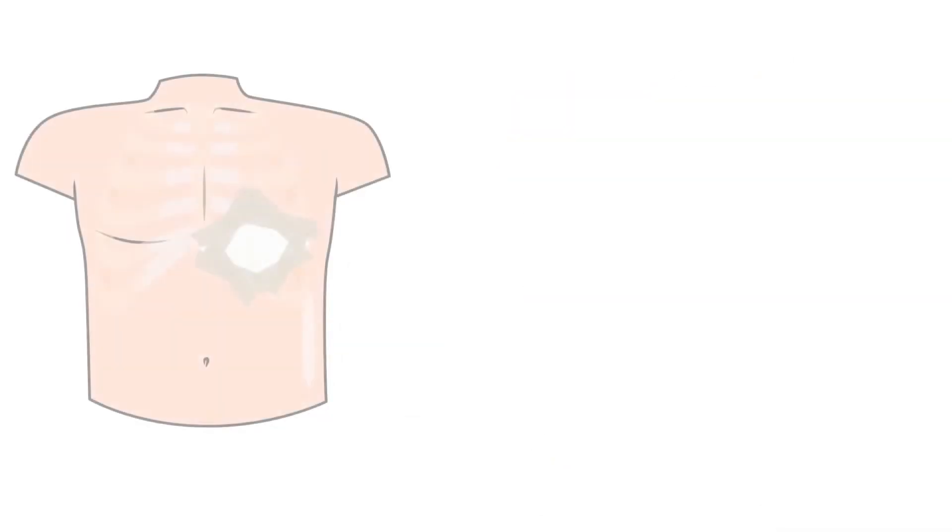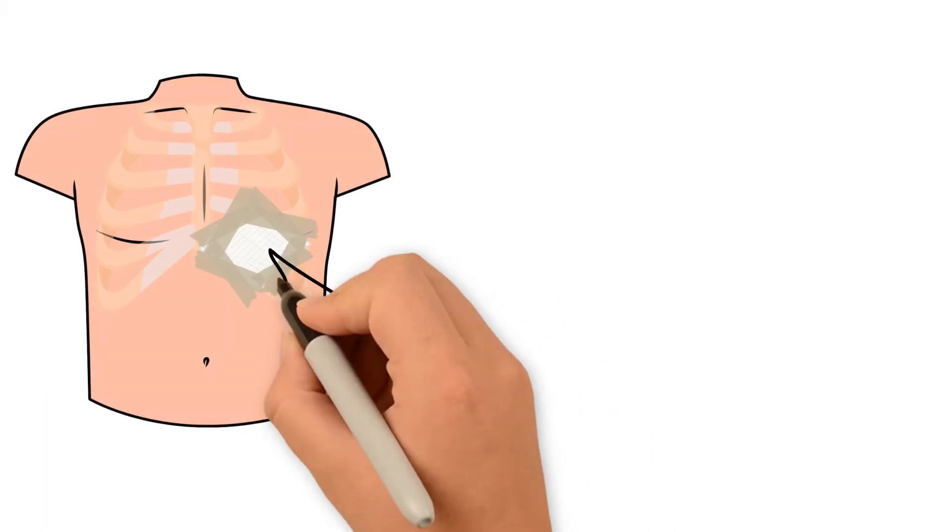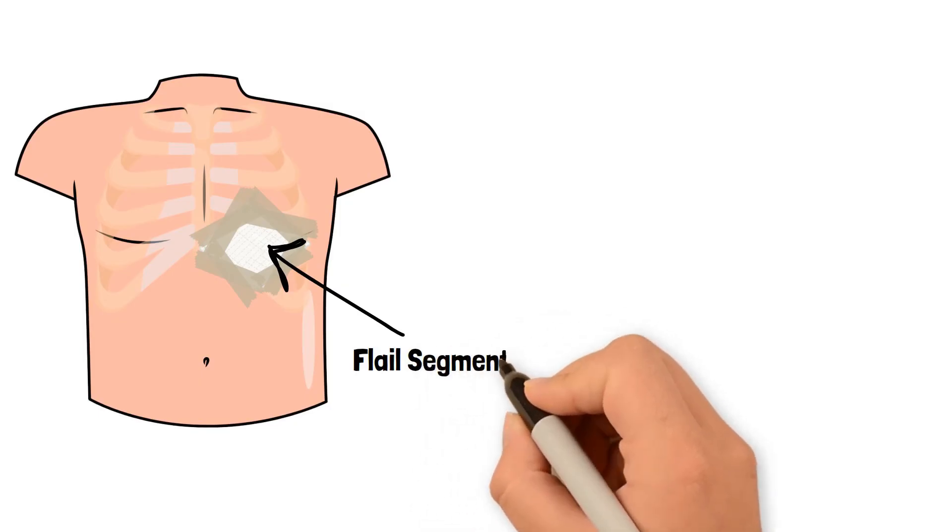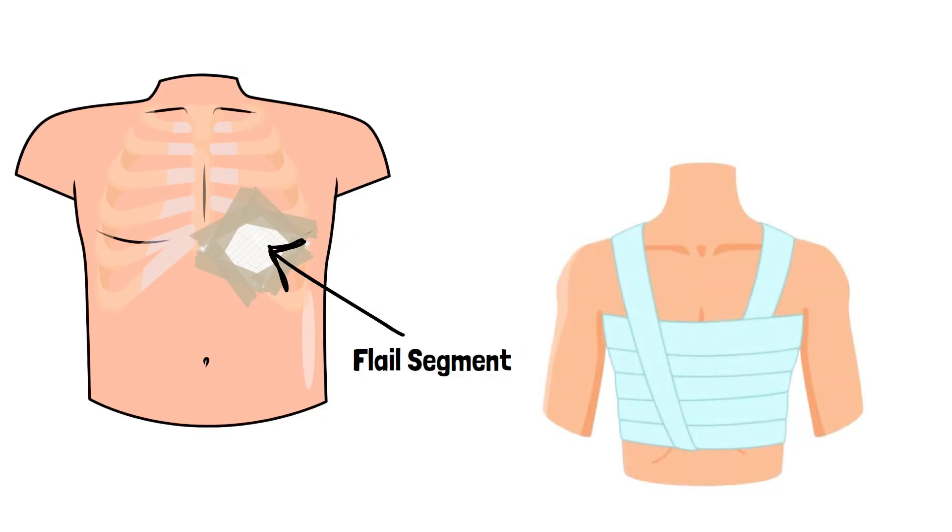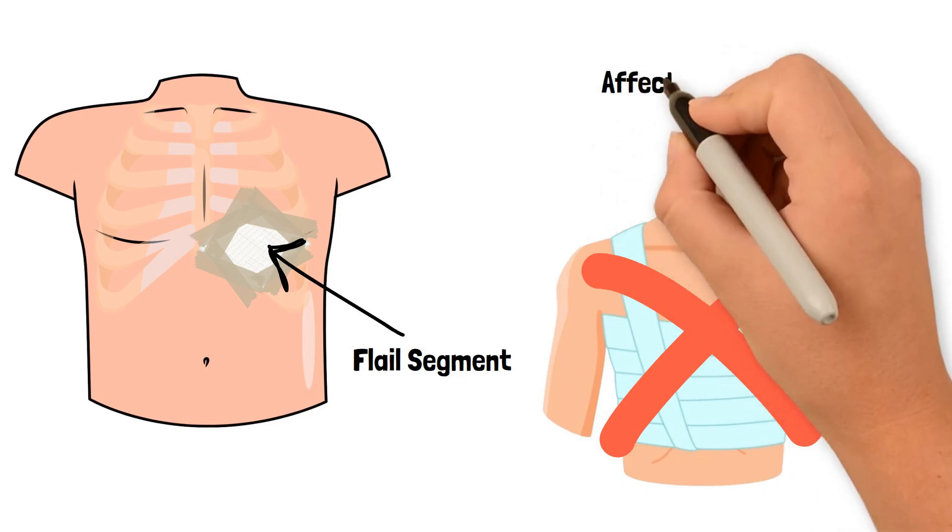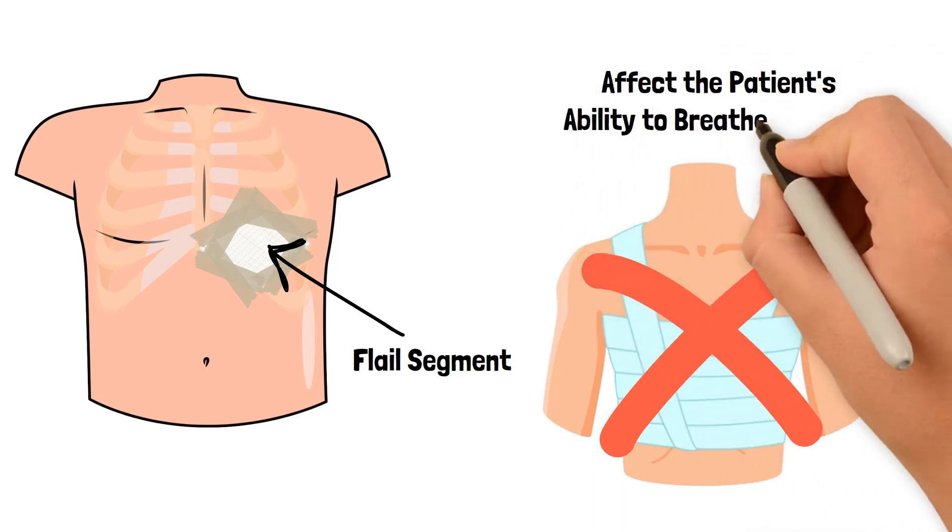To manage a flail segment, simply place a bulk dressing over the site where you see the paradoxical motion. This is the location of the flail segment. Then, tape the bulk dressing to the chest firmly. Make sure that the tape does not fully wrap around the chest, as this can restrict chest movement and affect the patient's ability to breathe properly.